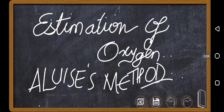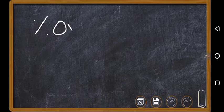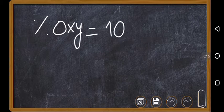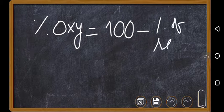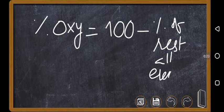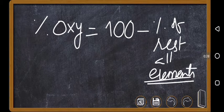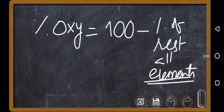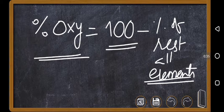We'll have a discussion about estimation of oxygen by the Aluise method. Normally, percentage of oxygen is simply calculated as 100 minus percentage of rest of elements. For example, if carbon is present at 40%, hydrogen at 20%, nitrogen at 10%, that's 40 plus 20 plus 10 equals 70, so the remaining 30% is oxygen. So percentage of oxygen equals 100 minus rest elements.